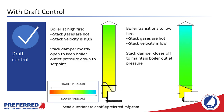How does draft control fix this problem? As the boiler outlet pressure goes below set point, the draft controller quickly closes off the stack damper to increase frictional losses and maintain the boiler outlet pressure at set point. When the draft is at set point, the combustion air fan provides the correct amount of combustion air.